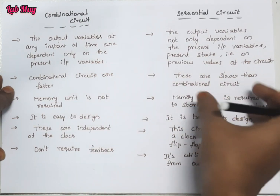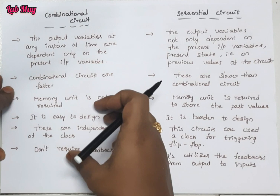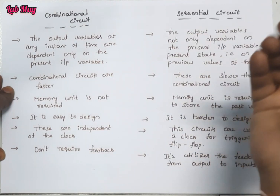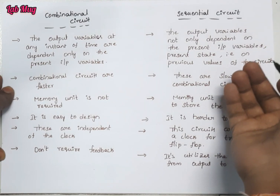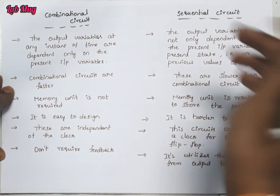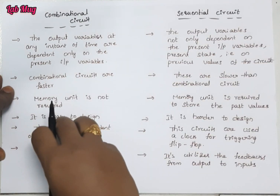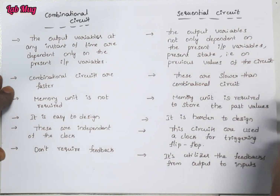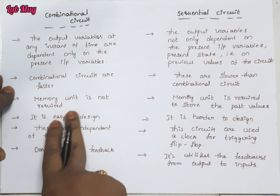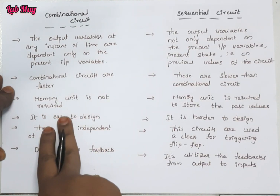In combinational circuits, the output is not only dependent on present values — past and previous values are also accessed, and that is the sequential circuit. Next, combinational circuits are faster comparatively. When compared to sequential circuits, combinational circuits access faster. The simple reason is that here we don't access past values, so combinational circuits are faster.